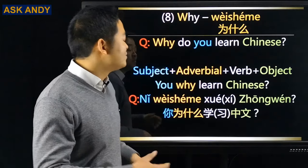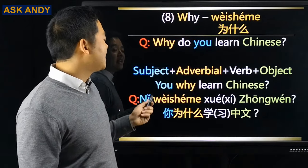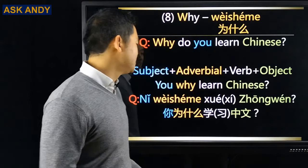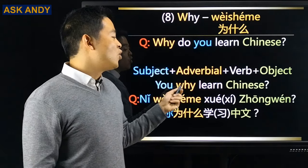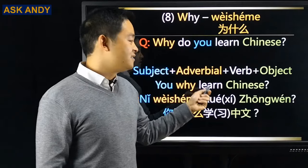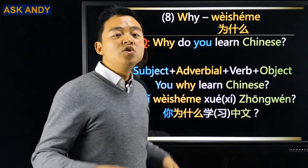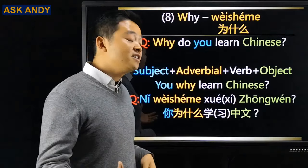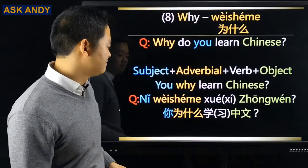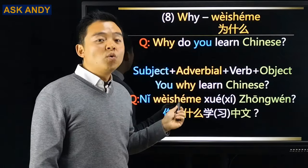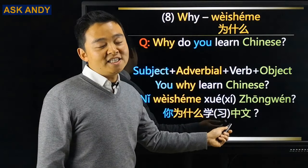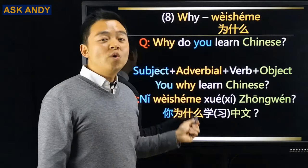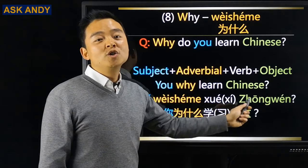For why, the pattern is Subject + Adverbial + Verb + Object. 'Why do you learn Chinese?' becomes: you / why / learn Chinese → 你为什么学习中文? The 习 is optional — you'll more commonly hear 你为什么学中文.